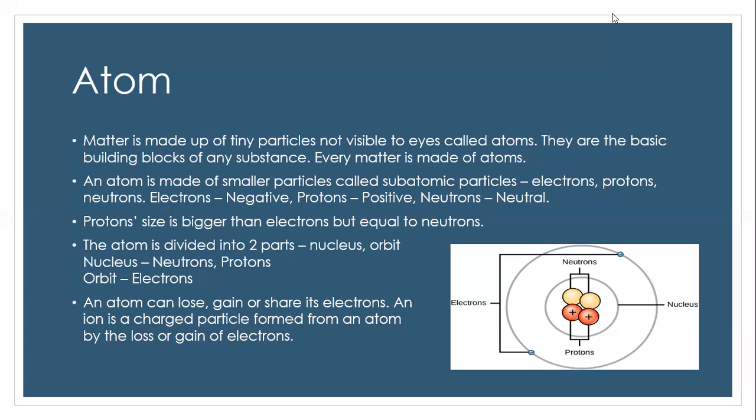An atom is made of smaller particles called subatomic particles: electrons, protons, and neutrons. Electrons carry a negative charge, protons carry a positive charge, neutrons carry a neutral charge.